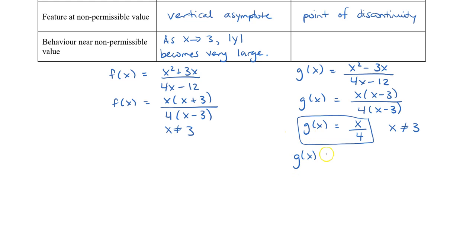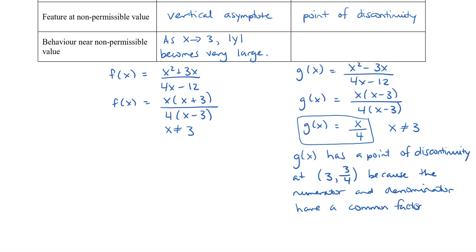So g(x) has a point of discontinuity at 3 and 3 fourths because the numerator and denominator have a common factor of (x minus 3). So I can say that the behavior near the non-permissible value is that now as x approaches 3, we can say that y actually approaches 3 over 4.